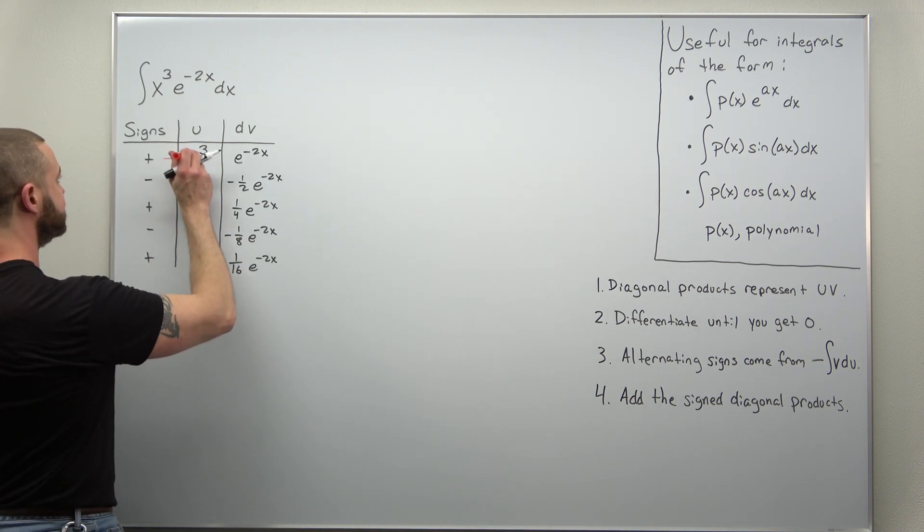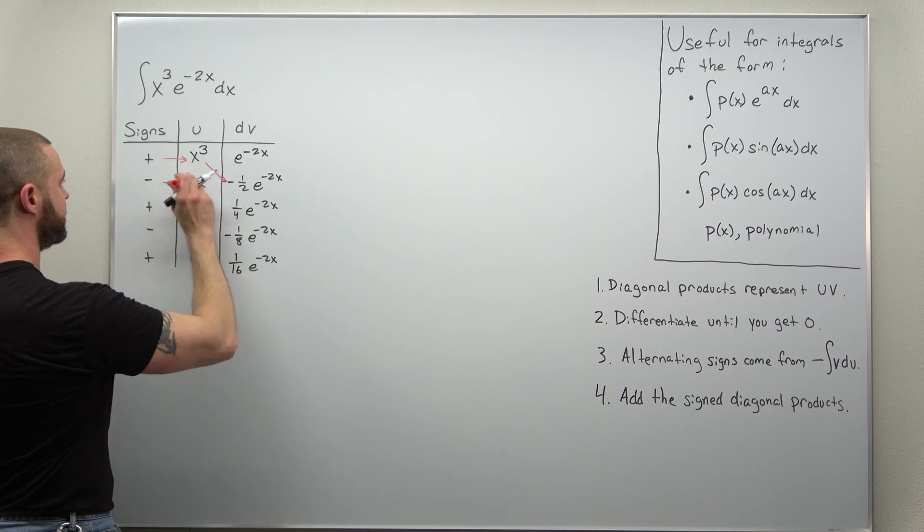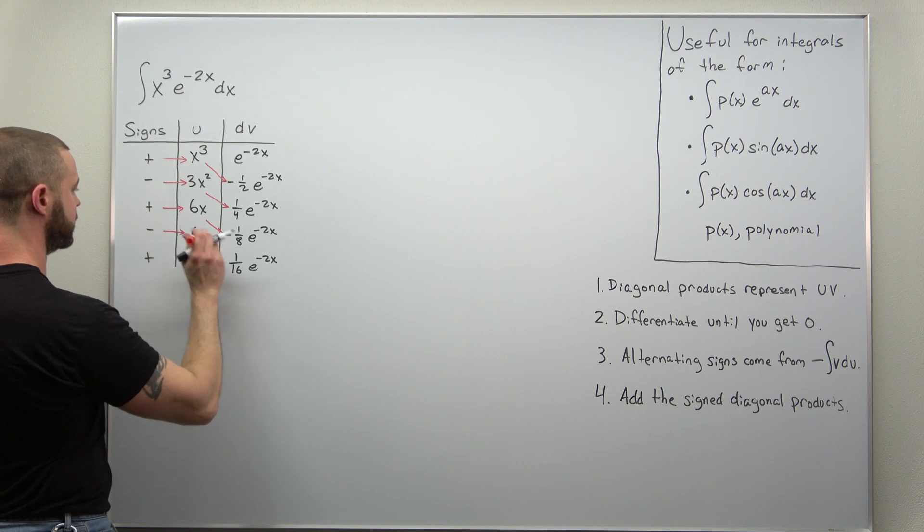So multiply across and diagonally there. And these diagonals, those are your uv terms.